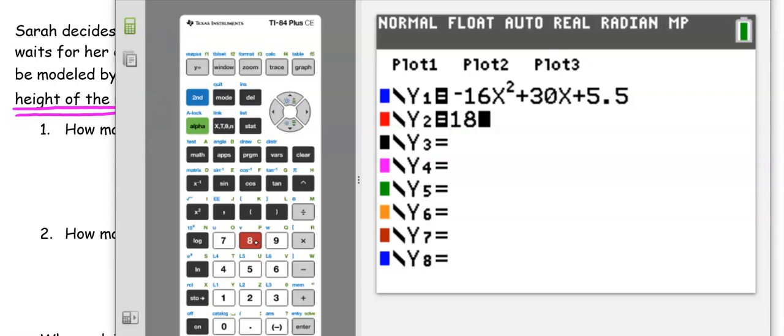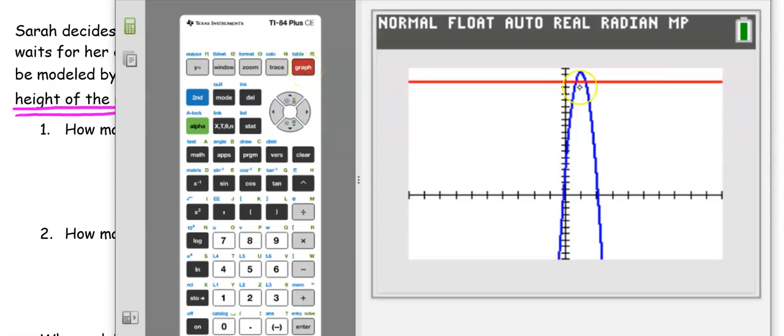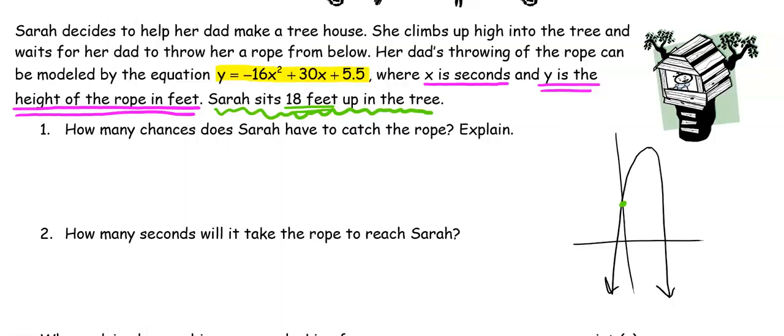So in our calculator we're going to go back to our y equals and I'm going to change that height. So I'm going to go to y2 and I'm going to enter in 18 because Sarah is 18 feet up on our graph. So now we can see here is Sarah's height. Again that's that y equals 18.